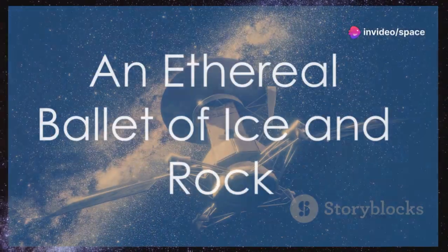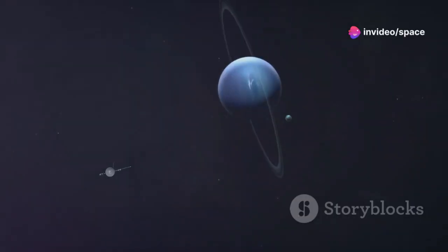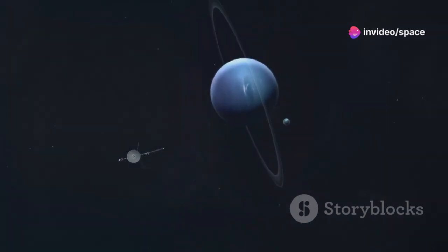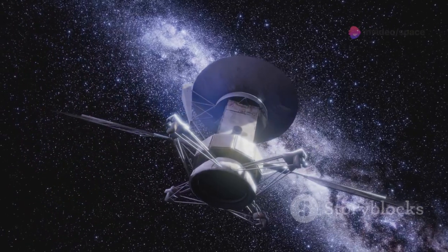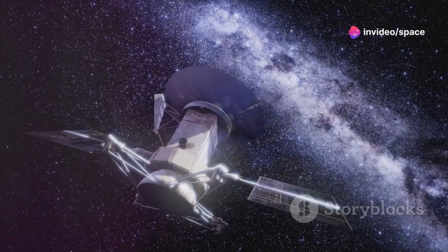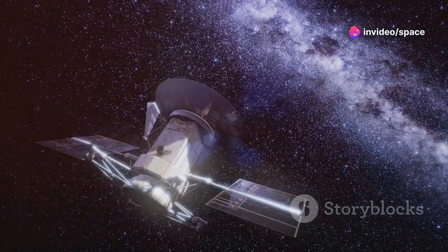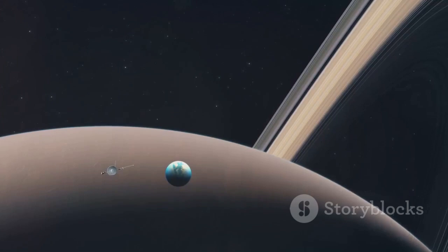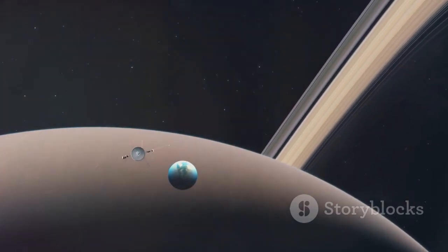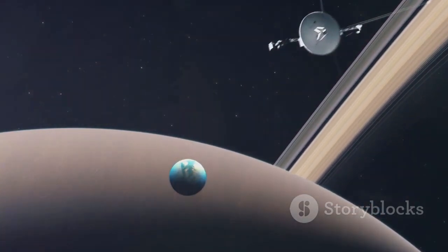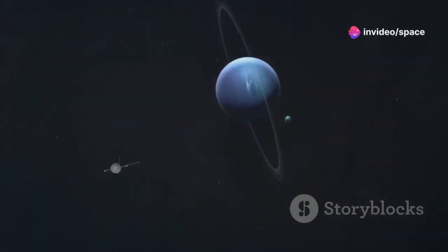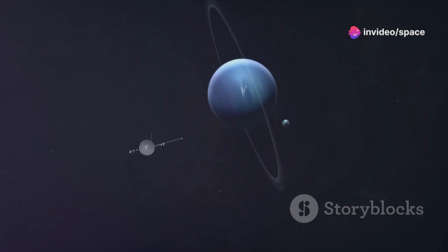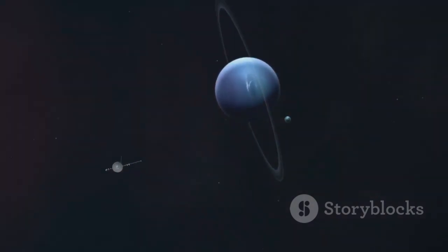Next on the Voyager's itinerary was Saturn, the ringed jewel of our solar system. Voyager 1 arrived in 1980, followed by Voyager 2 in 1981. The probe's cameras captured stunning images of Saturn's majestic rings, revealing their intricate structure and composition of countless particles of ice and rock, ranging in size from tiny grains to massive boulders. The probe also discovered several new moons, including Atlas, Prometheus, and Pandora.